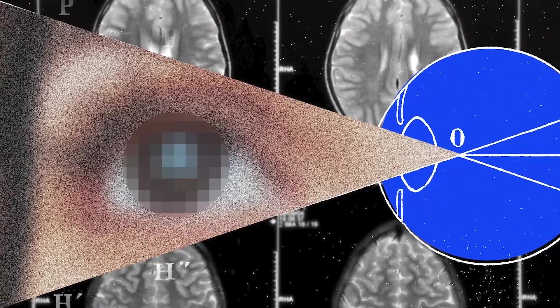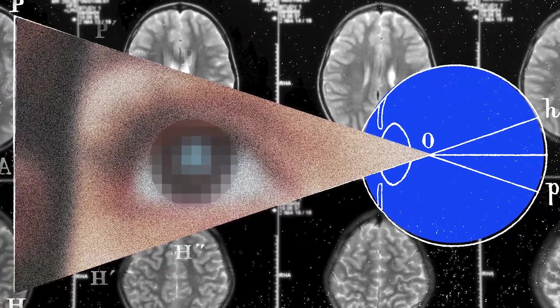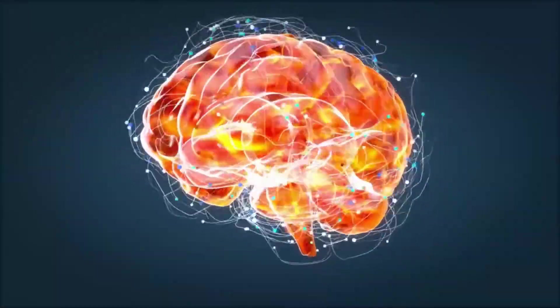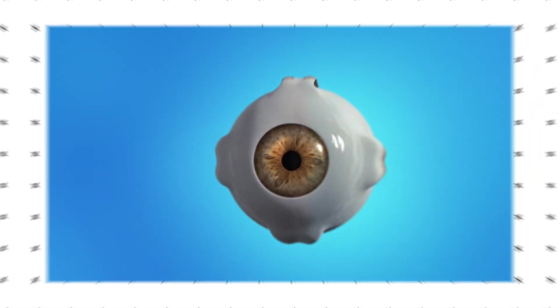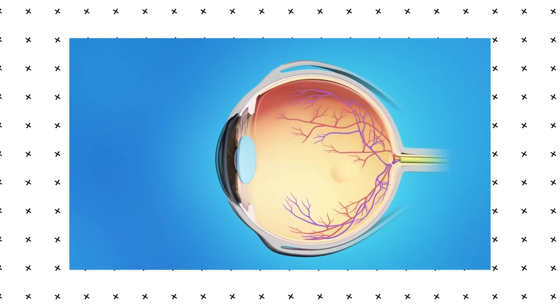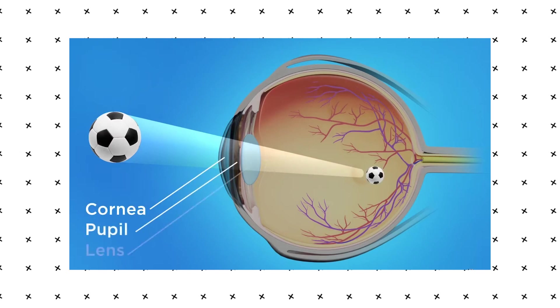But here's the fascinating part. Our brain doesn't receive a fully formed image. Instead, it gets a complex series of electrical impulses that it must decode and interpret. This process happens in layers, starting with basic edge detection and progressing to more complex recognition of objects, colors and movement.